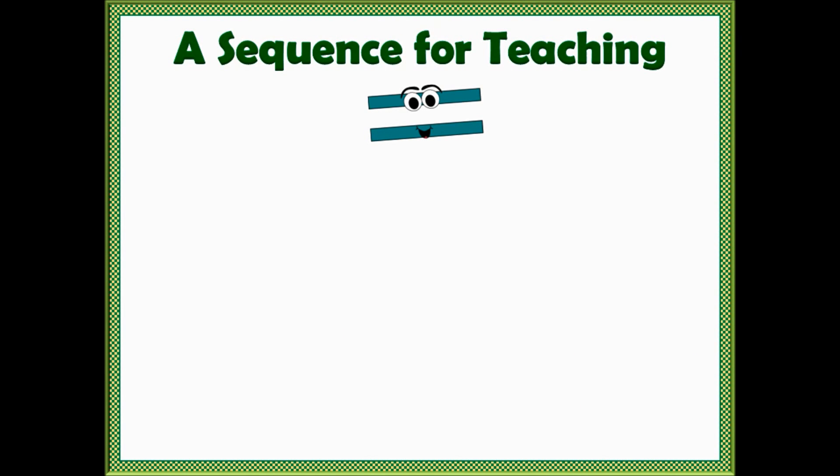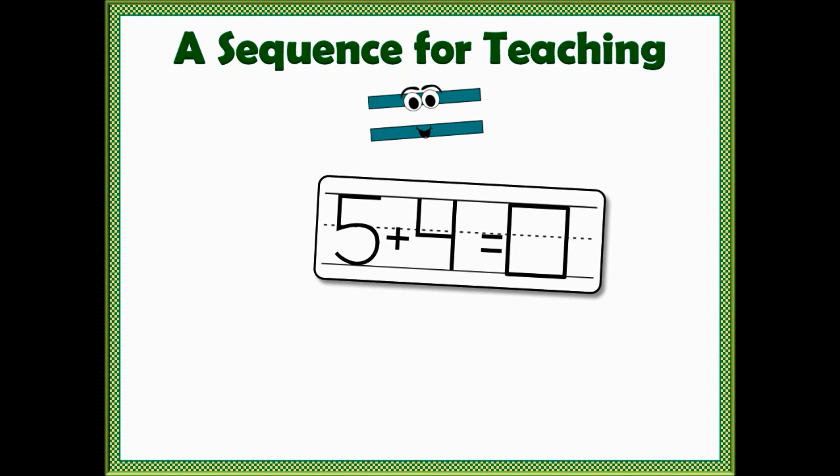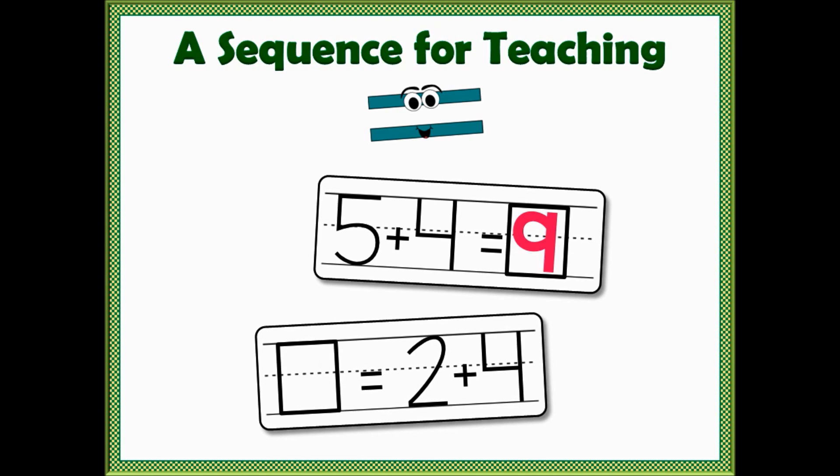The final step of understanding equality is stated in Standard 1.088. That is, determine the unknown whole number in an addition or subtraction equation relating three numbers. In order to do this successfully, students must first have had all the rich experiences that we discussed throughout this video.